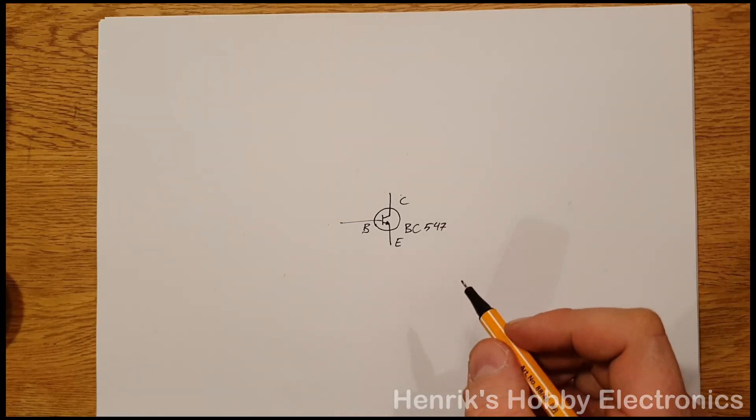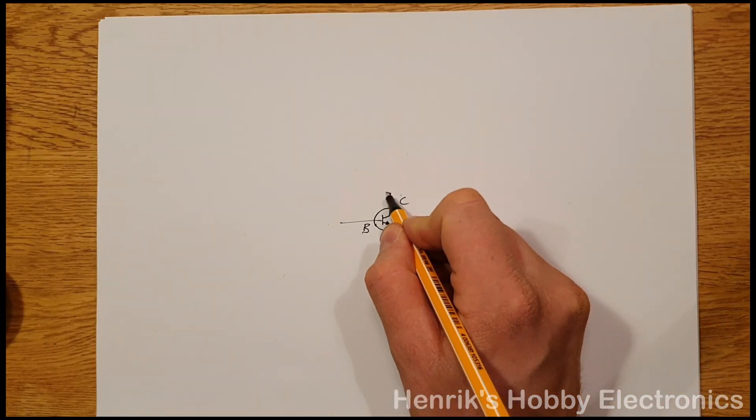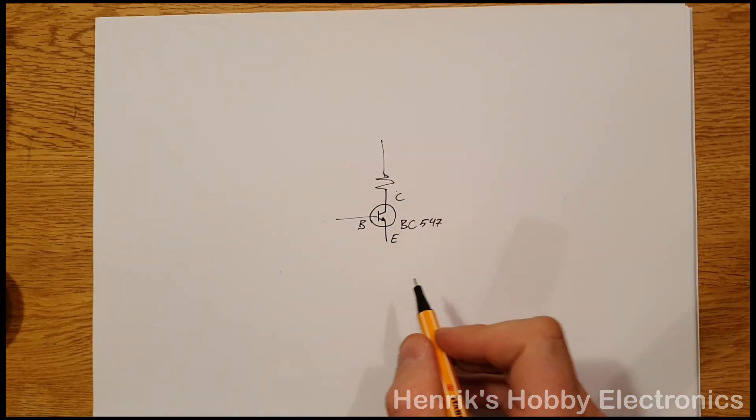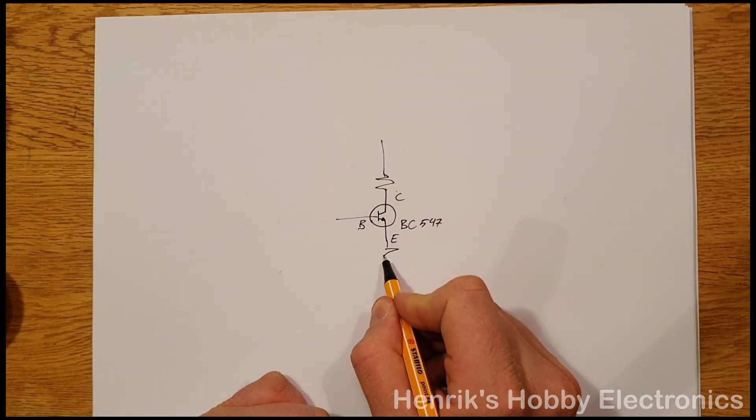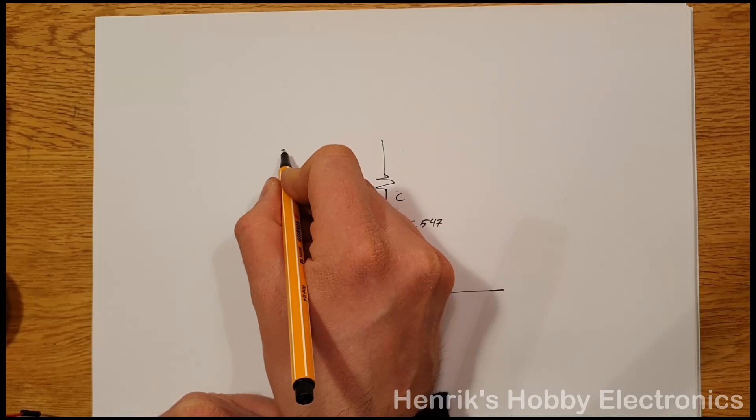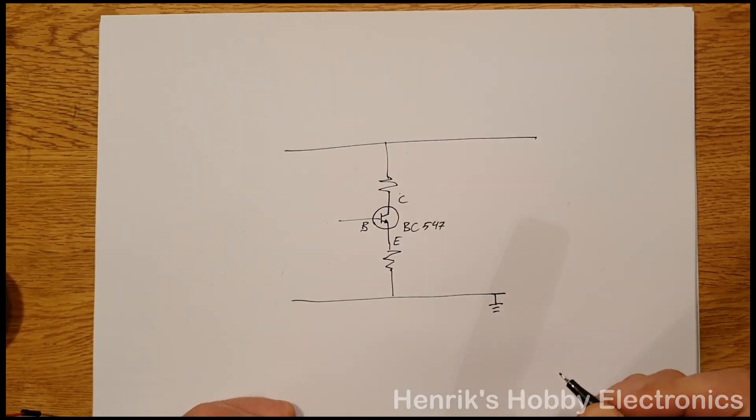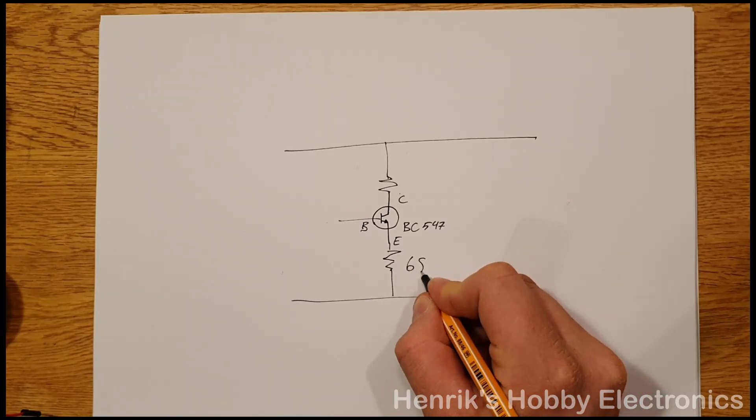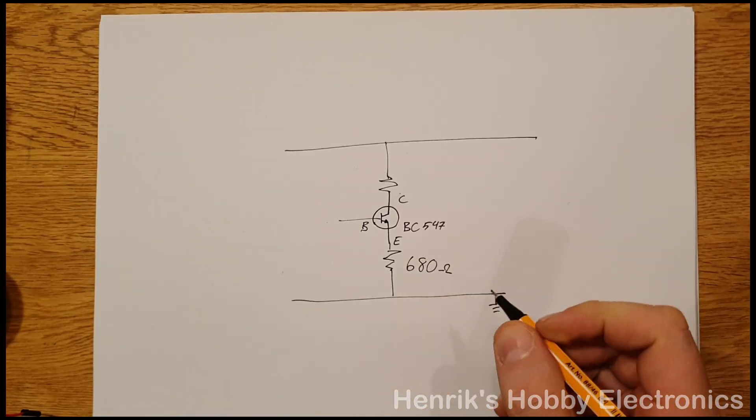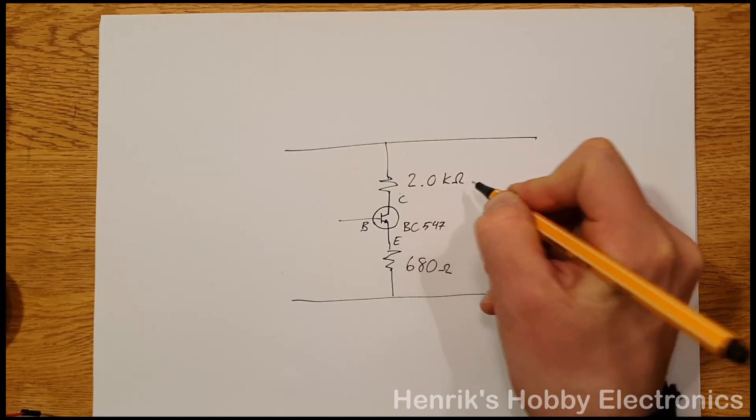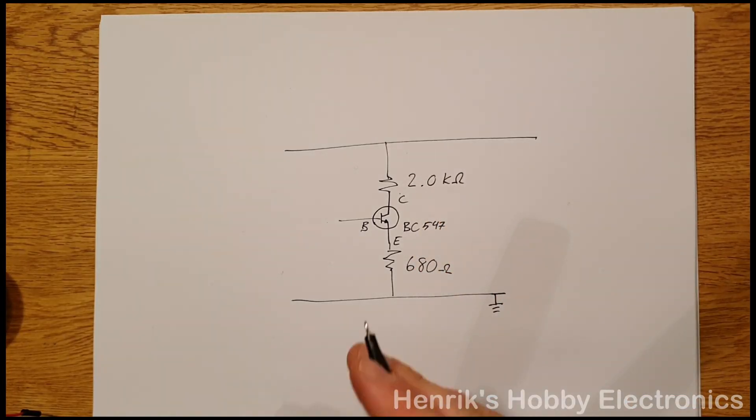Now we will limit this current from the collector to the emitter with two resistors. So there will be one here and one also at the emitter side. We will connect this to a 9 volt battery. So this resistor here will use a 680 ohm and we'll use a 2.0k ohm resistor at the collector side.